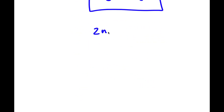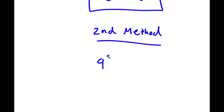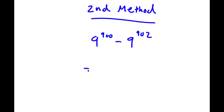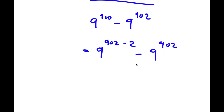Now a second method of solving this problem. Start with 9 to the power of 900 minus 9 to the power of 902. Instead of rewriting 902 as 900 plus 2, I'm going to rewrite 900 as 902 minus 2. So I have 9 to the power of 902 minus 2 minus 9 to the power of 902.